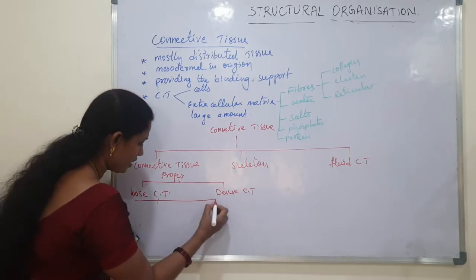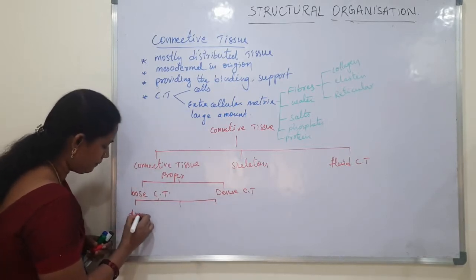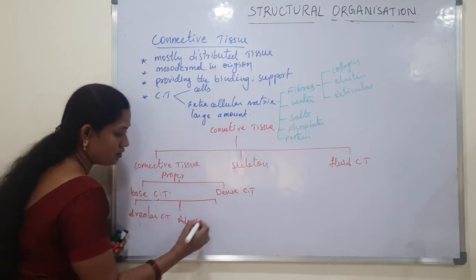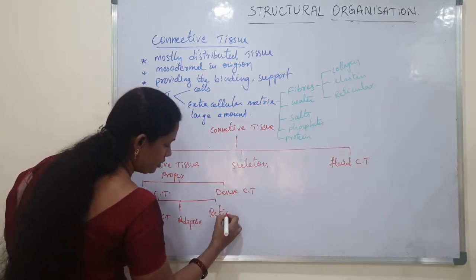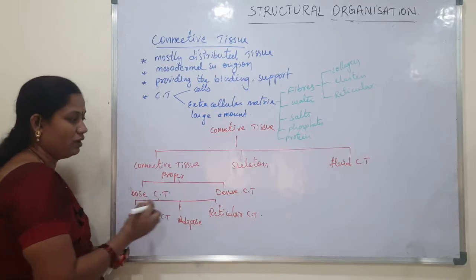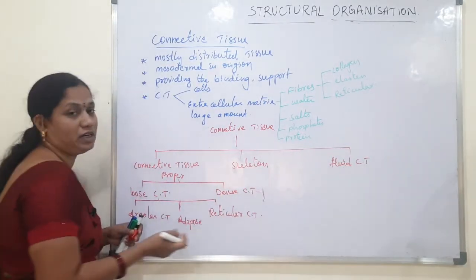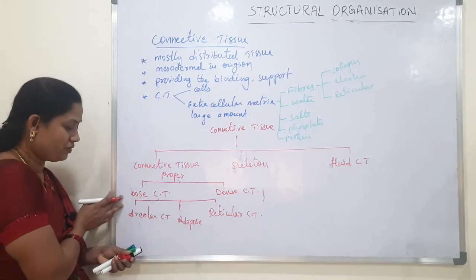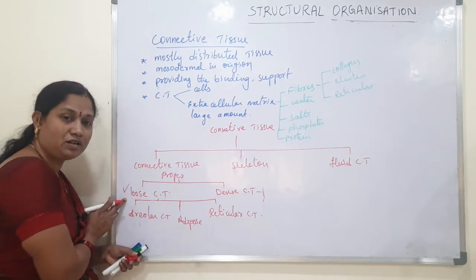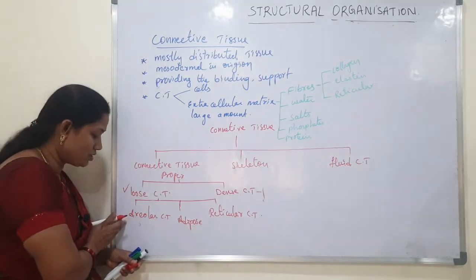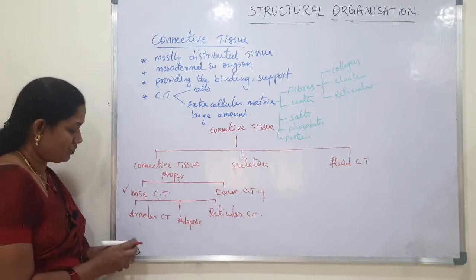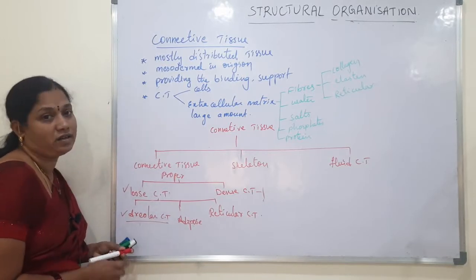Loose connective tissue is further divided into three types: areolar connective tissue, adipose connective tissue, and reticular connective tissue. First, we will discuss areolar connective tissue, where fibers are arranged in a loose manner.